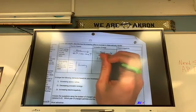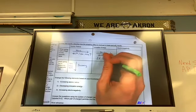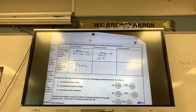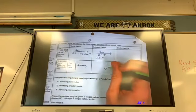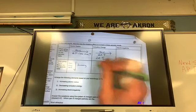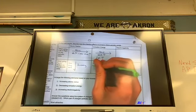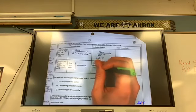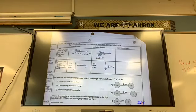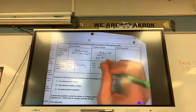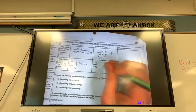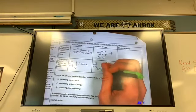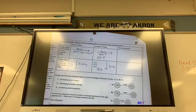So ionization energy is increasing as you move left to right. As I move down, once again, my shielding is increasing. Core charge is the same. So what happens to my ionization energy as I move down? As I move down, ionization energy is decreasing.